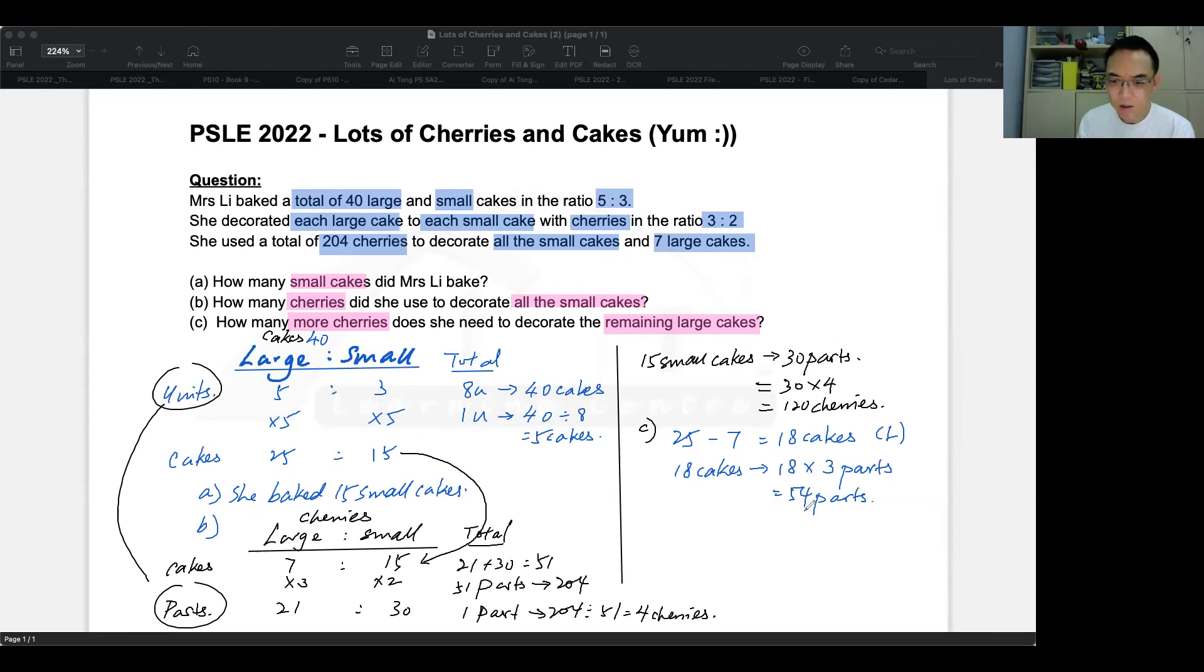So 18 cakes would require 54. However, this is not the answer. Because this three here is parts. And that means you have 54 parts. To answer the question, you need to change this into cherries. It says here that one part is 4 cherries. So to answer the question, 54 parts, which is for the 18 cakes, will be 54 times 4. Answer 216 cherries.